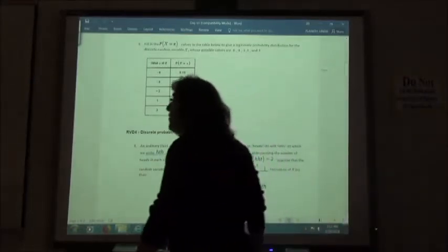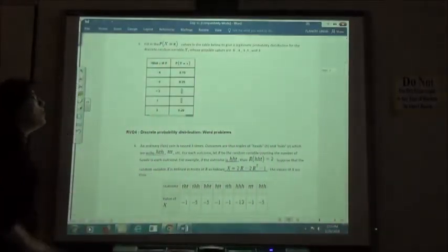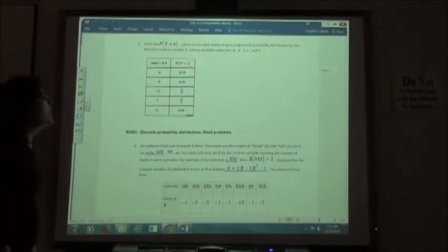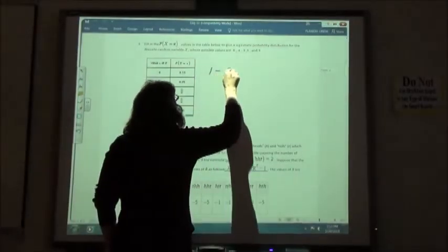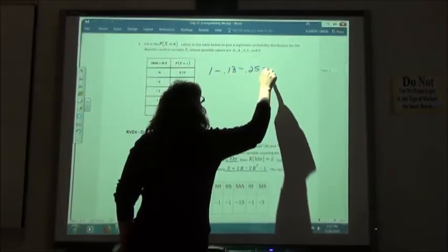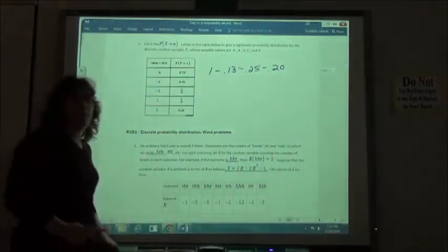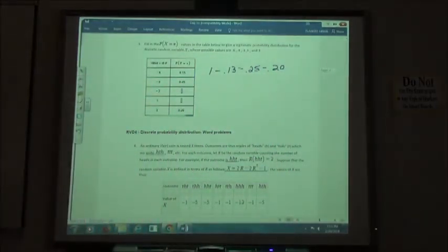So number three, same kind of thing. I know that in my table all of my numbers should add up to one. I'm going to take one and subtract the ones I already know. And that's going to tell me how much I have left to divide up between the other two.